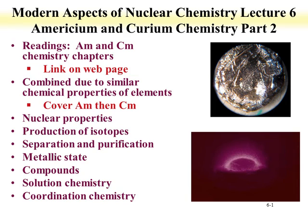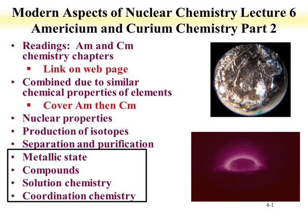Welcome to Part 2 of Lecture 6 for Modern Aspects of Nuclear Chemistry. This is a continuation of the lecture on americium and curium chemistry. We'll start off the second part discussing americium metallic state, compounds, solution chemistry, and coordination chemistry.